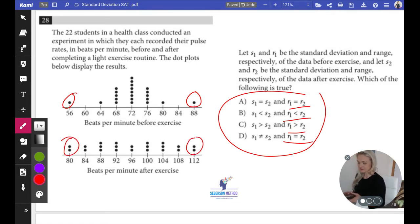So the greatest value for the first set is 88 minus 56, that gives me 32. And then 112 minus 80, that gives me 32.